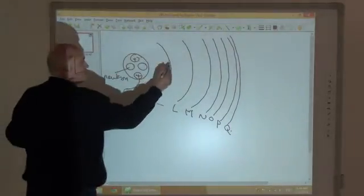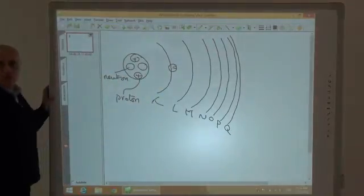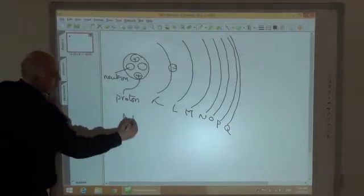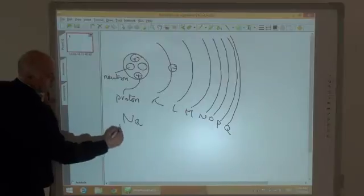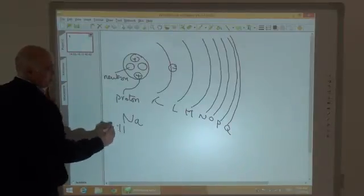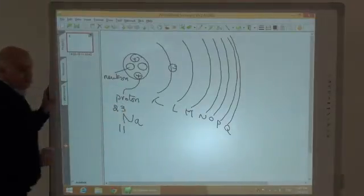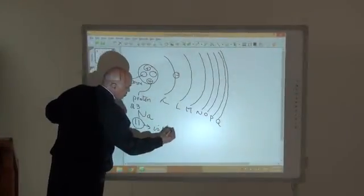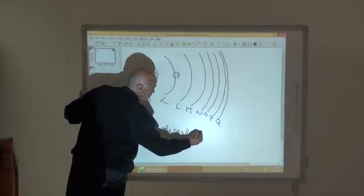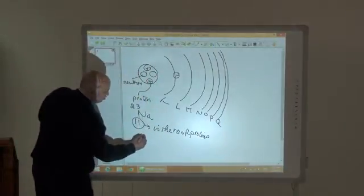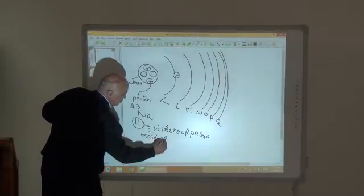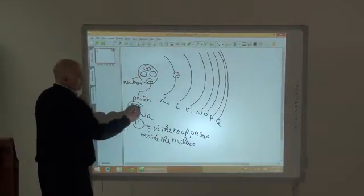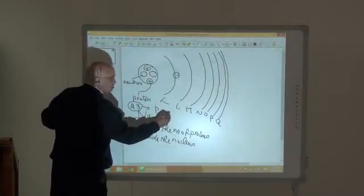The number of electrons around the nucleus equals the number of protons inside the nucleus. For example, if we have a sodium atom, the atomic number equals 11 and the mass number equals 23. The atomic number is the number of protons inside the nucleus, and the mass number is the total number of protons and neutrons.